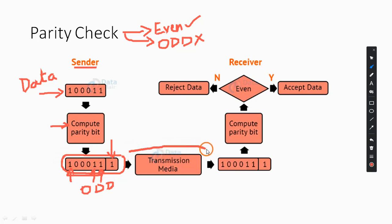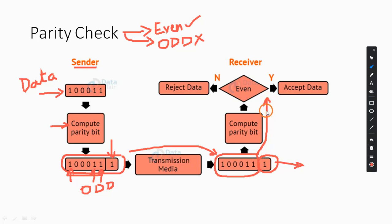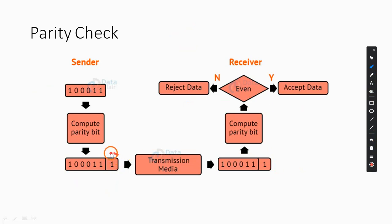The receiver keeps the received parity bit aside, then uses the data to compute the parity bit again. If the computed parity bit is the same as the received parity bit, we say there is no error; otherwise we say there is an error and reject the data. In parity check we add one extra bit to the data — the parity bit.